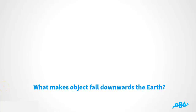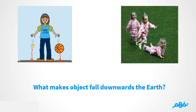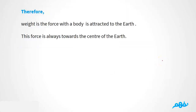Welcome to the second part of the video. What makes objects fall downwards to the earth? We have a girl with two balls falling downwards, and another girl who is running and then falls on the ground — downward to the earth. The reason behind this is weight. Weight is the force by which a body is attracted to the earth.